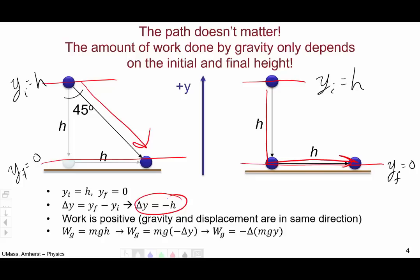In fact, we've calculated it must be positive mgh. Trying to convert to the coordinate system we have in this problem, we can use delta y equals negative h and substitute for h, giving us that the work done by gravity is mg times minus delta y.